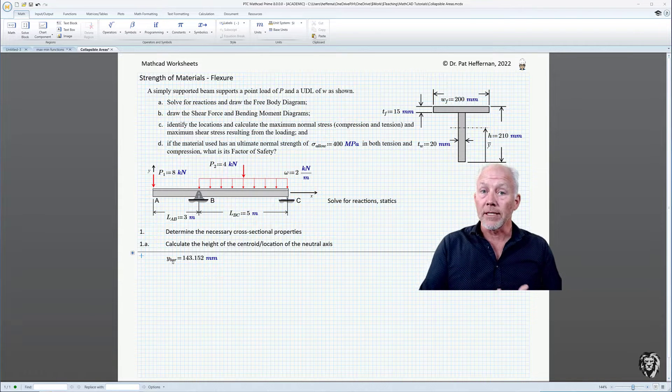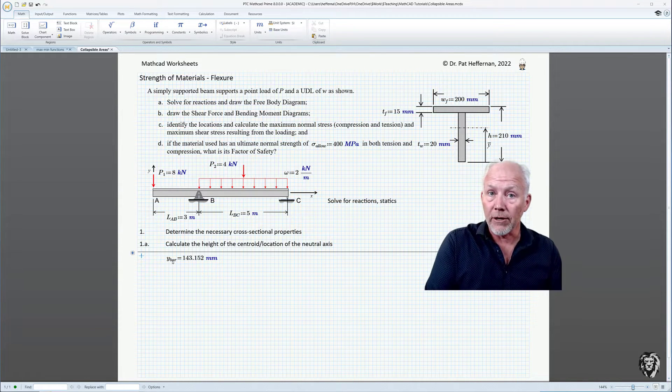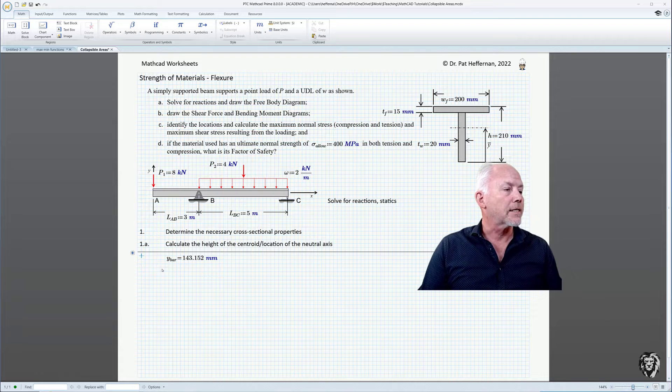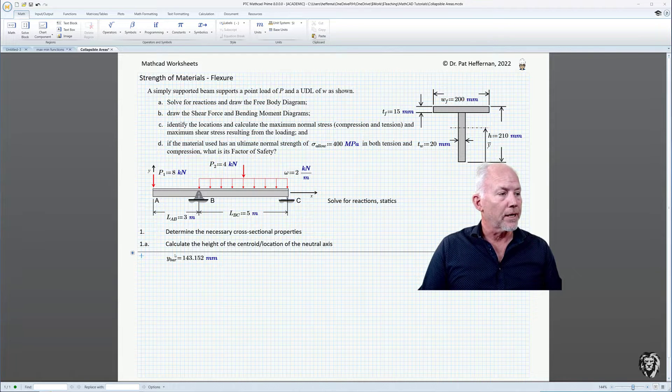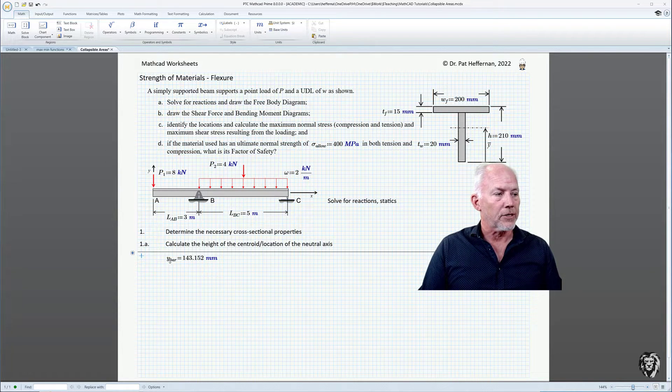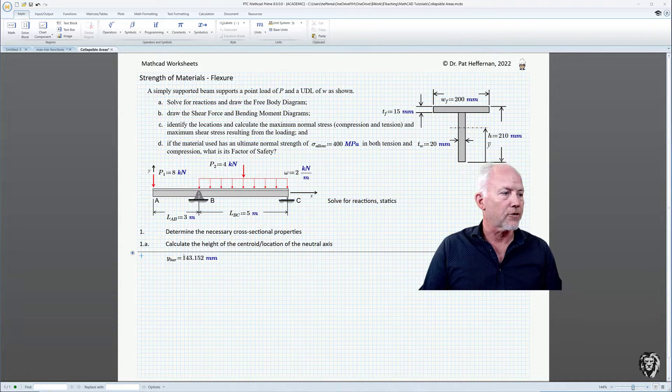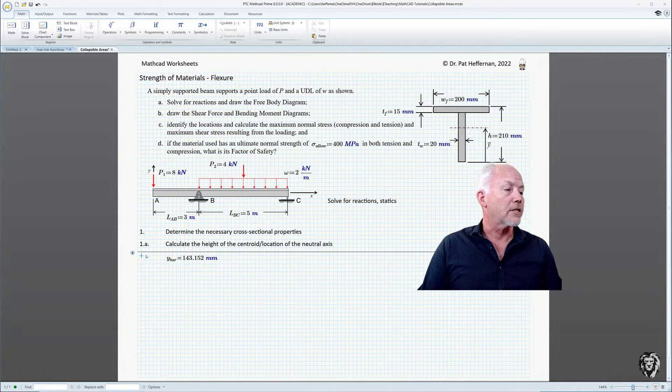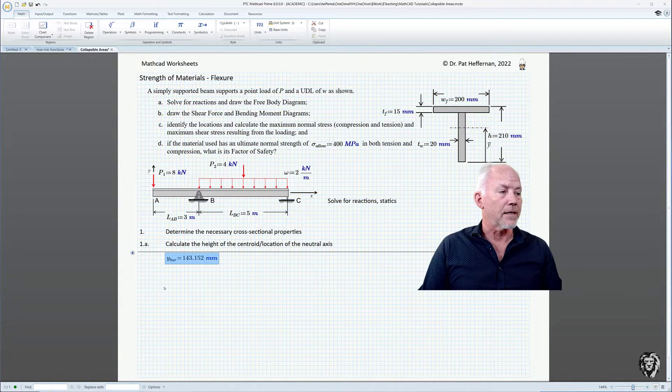Now, one of the things that I often do, because I do keep my collapsible areas collapsed most often, is I put the summary output outside of the area. So you see, the whole purpose of this was to calculate the location of the centroid. So that's Y bar.